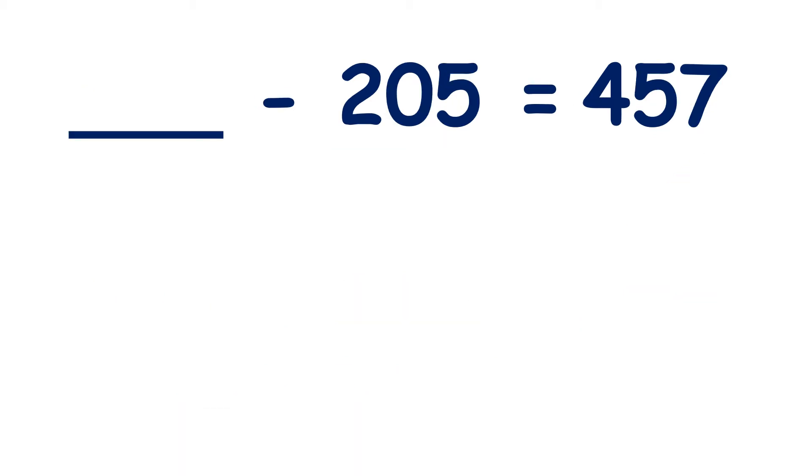Now we have something minus 205 equals 457. So how can we find our missing number? Well, remember, if we have a number family triangle, when we subtract a bottom number from a top number, we get the other bottom number. So we've subtracted 205 from something to get 457.